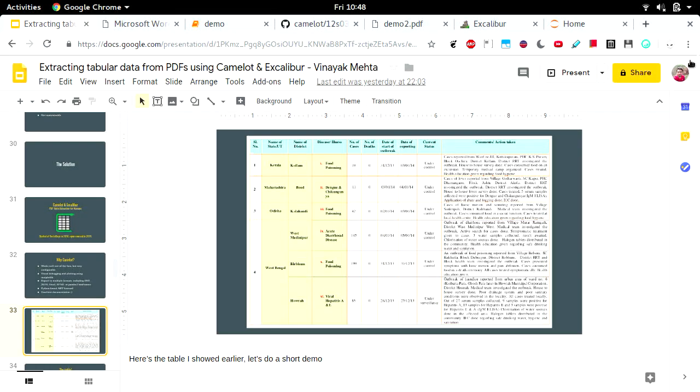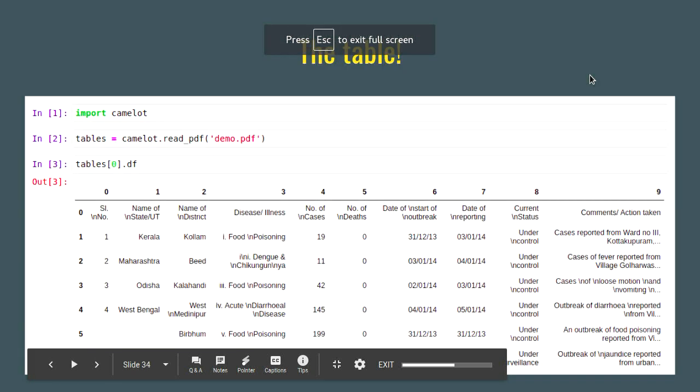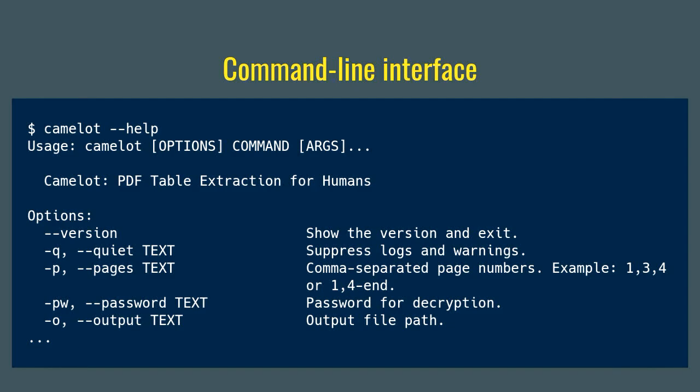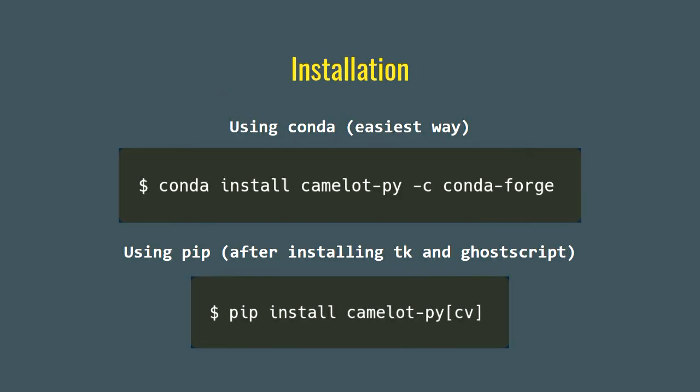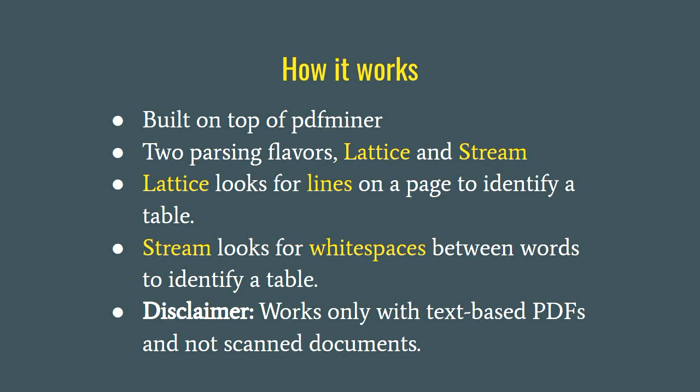Camelot also comes with a command line interface. Installation is pretty easy using Conda — you can just do conda install camelot-py and specify the channel, which is Conda Forge. If you're using pip, you'll need to install some dependencies first, which are Tk and Ghostscript, and then do pip install camelot-py[cv]. CV is needed because it installs OpenCV with the package. Under the hood it's built on top of PDFMiner, a great Python library that gives you all the text components on a PDF page along with their x, y locations.